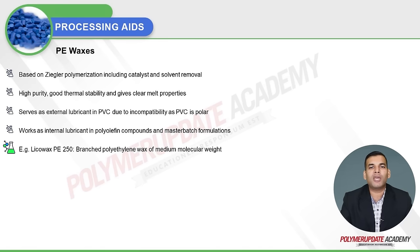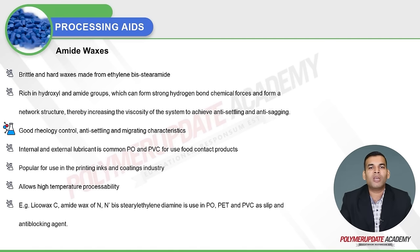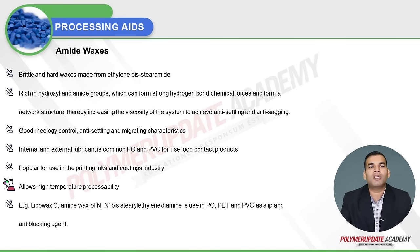Polyethylene waxes serve as an external lubricant in PVC due to incompatibility, as PVC is polar in nature, and work as an internal lubricant in polyolefinic compounds and masterbatch formulations. A commercial example is Licowax PE 250, a branched polyethylene wax of medium molecular weight. Amide waxes are brittle and hard waxes made from ethylene bis-stearamide, rich in hydroxyl and amide groups which form strong hydrogen bonds, creating a strong network that increases viscosity for anti-settling and anti-sagging features. They work as internal and external lubricants in polyolefin and PVC for food contact products, are popular in printing inks and coatings, and a commercial example is Licowax C, an amide wax of N,N'-bis-stearyl ethylene diamine, used as a slip and anti-blocking agent for polyolefins, PET, and PVC.